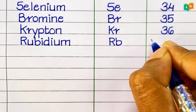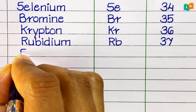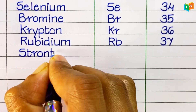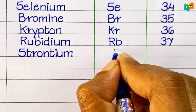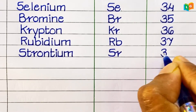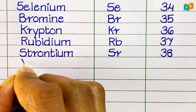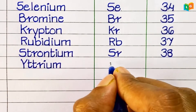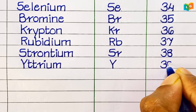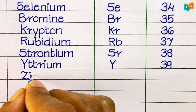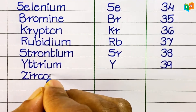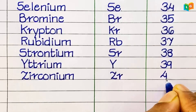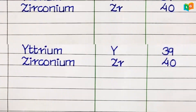Rubidium, symbol Rb, atomic number 37. Strontium, symbol Sr, atomic number 38. Yttrium, symbol Y, atomic number 39. Zirconium, symbol Zr, atomic number 40.